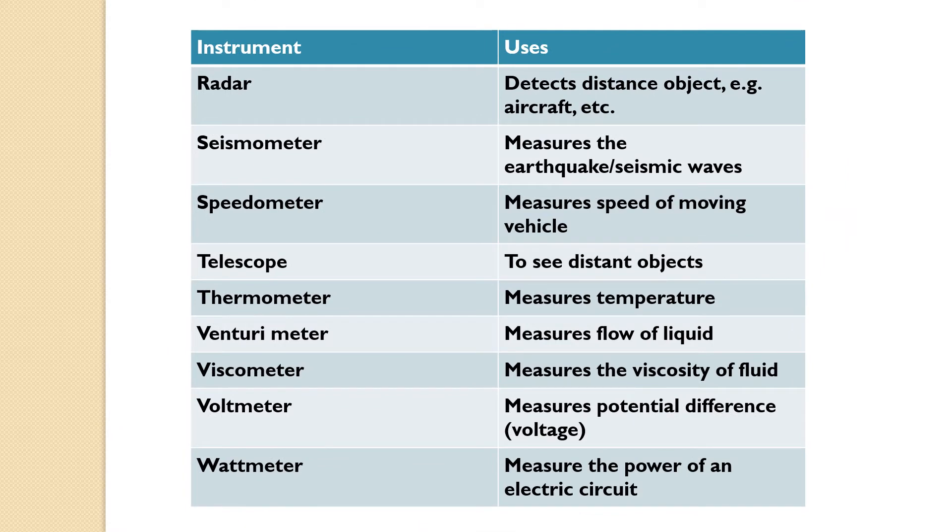Radar is used to detect distant objects. Seismometer measures the earthquake or seismic waves. Speedometer measures speed of moving vehicle. Telescope is to see distant objects. Thermometer is to measure the temperature.